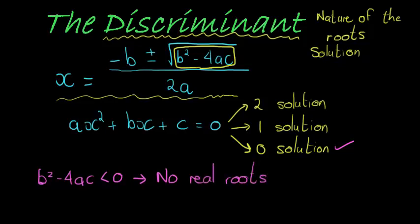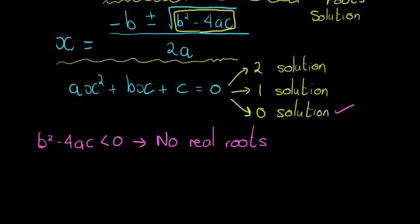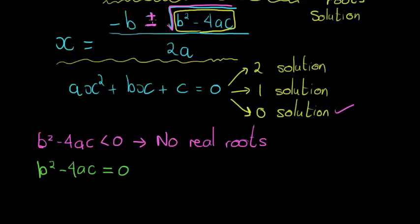No real roots means I won't have any real numbers as a solution. Next up, you notice that this is the value that causes my solution to have two answers. The reason is because I'm adding it for the one and subtracting it for the other one. So if I find that the square root of whatever is inside is equal to 0 — in other words, if b squared minus 4ac is equal to 0 — then the square root of that will be equal to 0. I'll be adding nothing and subtracting nothing, so all I'll have is negative b over 2a, which means only one answer. So if it is equal to 0, then I will have one solution, one real root.